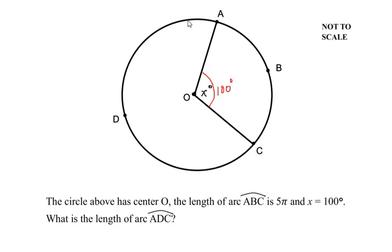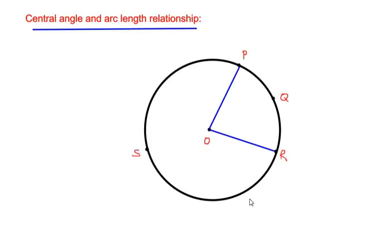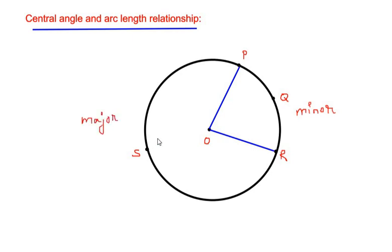To solve this example, let us first understand the relationship between the central angle and the arc length. I have drawn a circle with center O, and the lines PO and RO divide the circle into two sectors: a small sector POR and a larger sector PSR. The arc PQR acts as a minor arc because it is a very small part of the circle, and the arc PSR acts as a major arc because it covers a larger part of the circle.